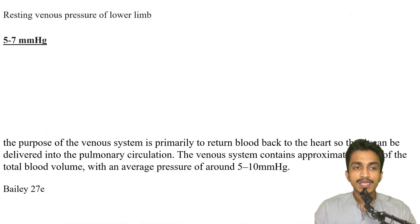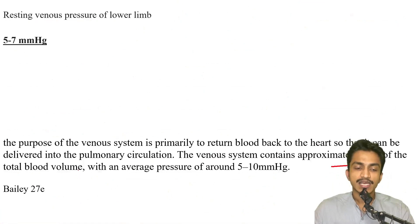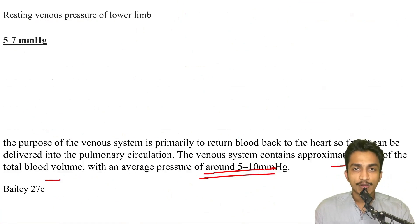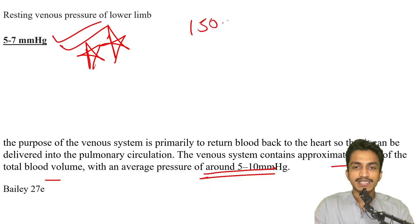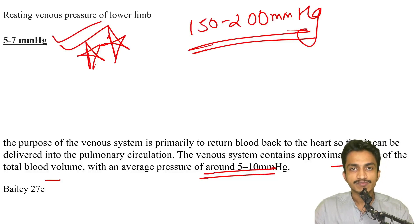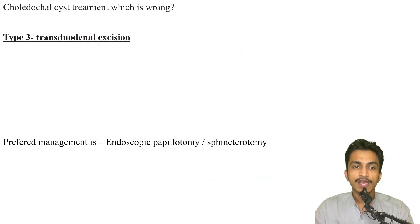Resting venous pressure of the lower limb, taken from Bailey: the venous system contains 60% of total blood volume. The resting pressure in the lower limb is the column arising from the foot reaching up to the heart, which is between 5 to 7 mmHg. With movement, pressure rises to 150–200 mmHg due to the calf muscle pump, but the resting pressure is 5 to 7 mmHg.